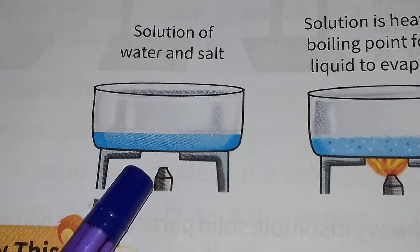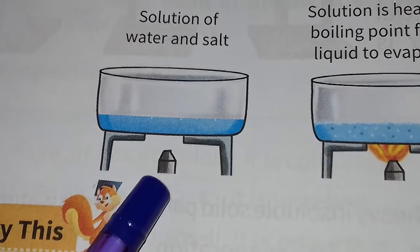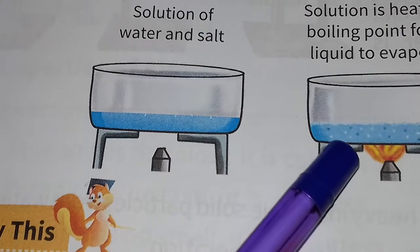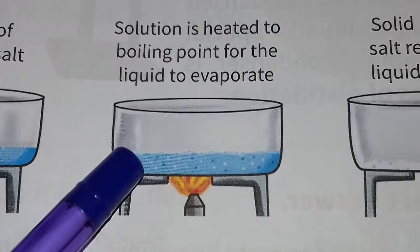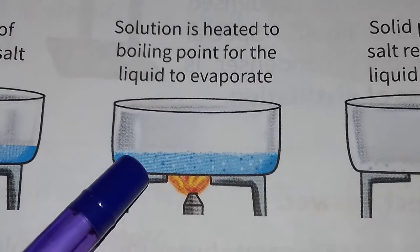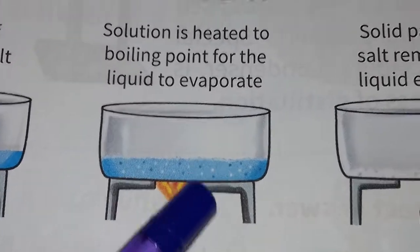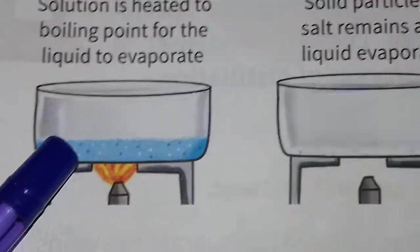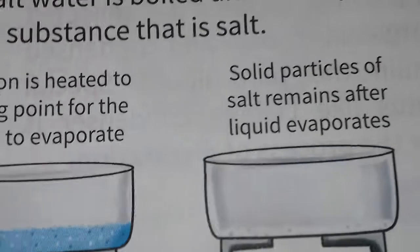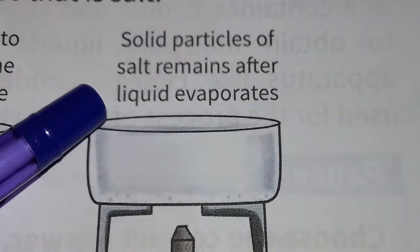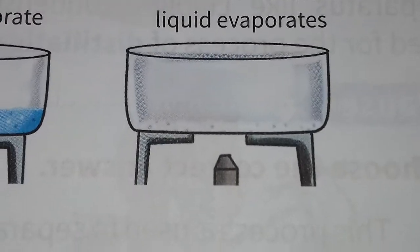You can see here in the first picture: the solution of water and salt is boiled until the liquid changes into gas. When the liquid changes into gas it leaves behind the dissolved substance, which is salt. The solution is heated to boiling point for the liquid to evaporate, and solid particles of salt remain after the liquid evaporates.